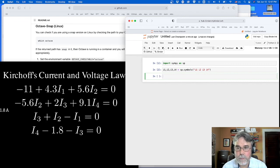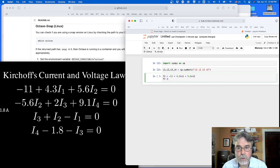But basically think of it as this. I1, I2, I3, and I4 are just symbols that stand for the current in the first branch, second branch, third branch, and so on. And what I want to do is to define equations. Let's say function 1, we'll call it, is minus 11 plus 4.3 times I1 plus 5.6 times I2. Function 2 is the second equation. Minus 5.6 times I2 plus 2 times I3 plus 9.1 times I4. That's it.